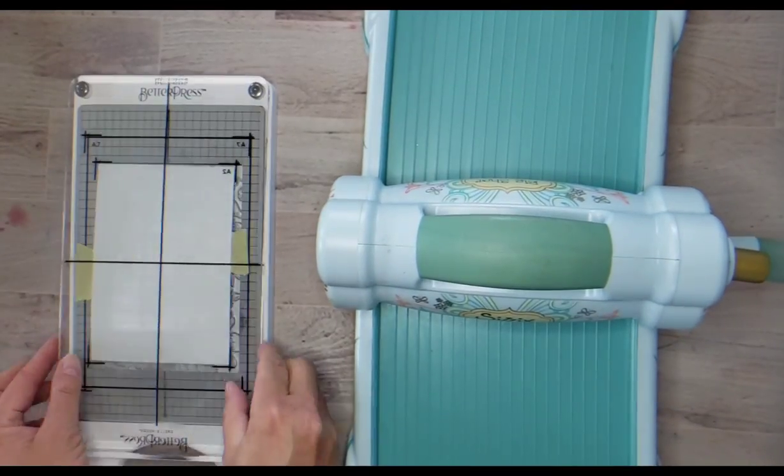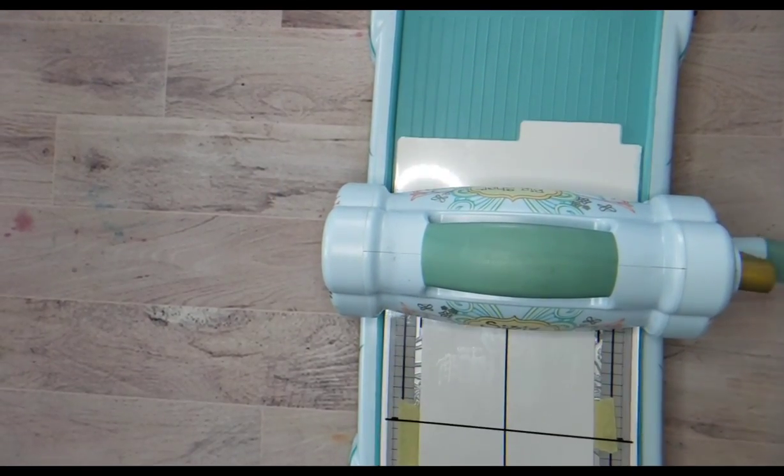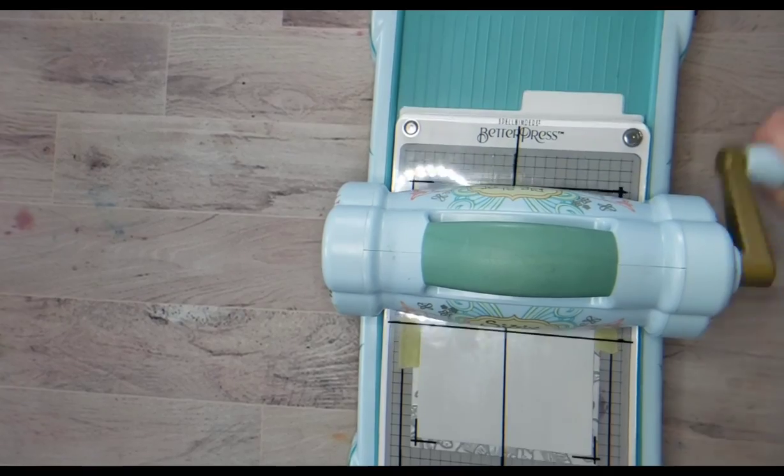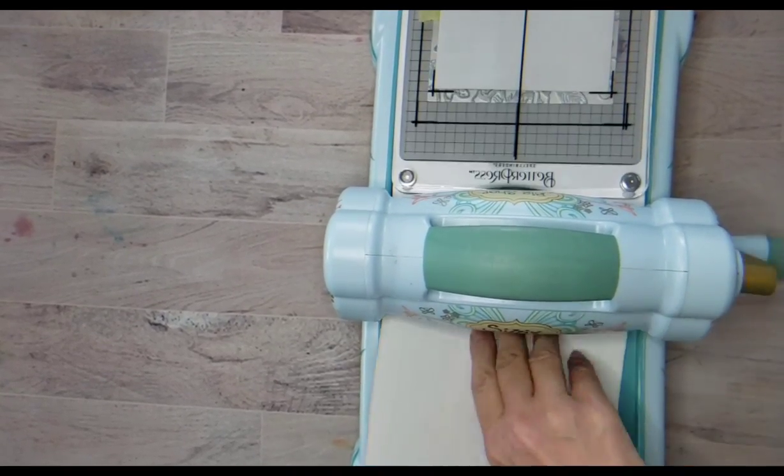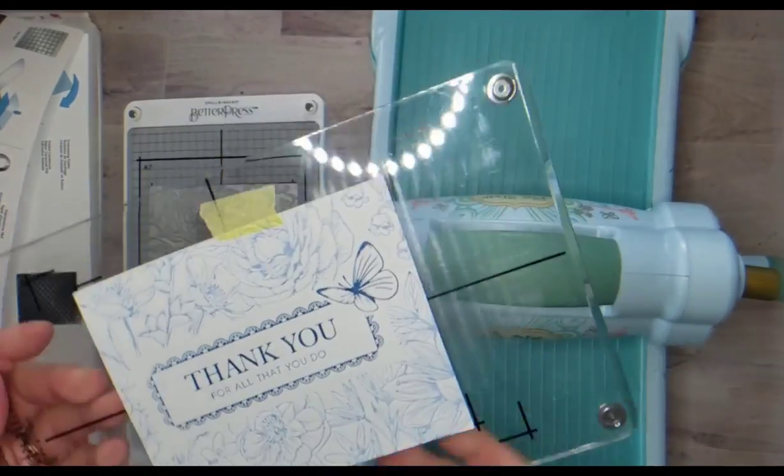So I went back and I taped it at the sides again. Now in the end, I already have a plan for this card. I'm going to cut four edges off and frame it with a different color. So that's okay that I'm using the tape on the sides. Again, I have those shims in there that the Better Press came with. And I'm also using my Sizzix platform shim.